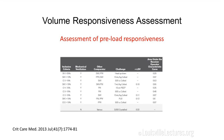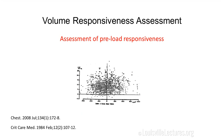This is confirmed by a meta-analysis I participated in, which showed that the area under the curve of CVP to predict fluid responsiveness is basically 0.5 — essentially flipping a coin. Another study showed that CVP doesn't correlate with total blood volume in the body.